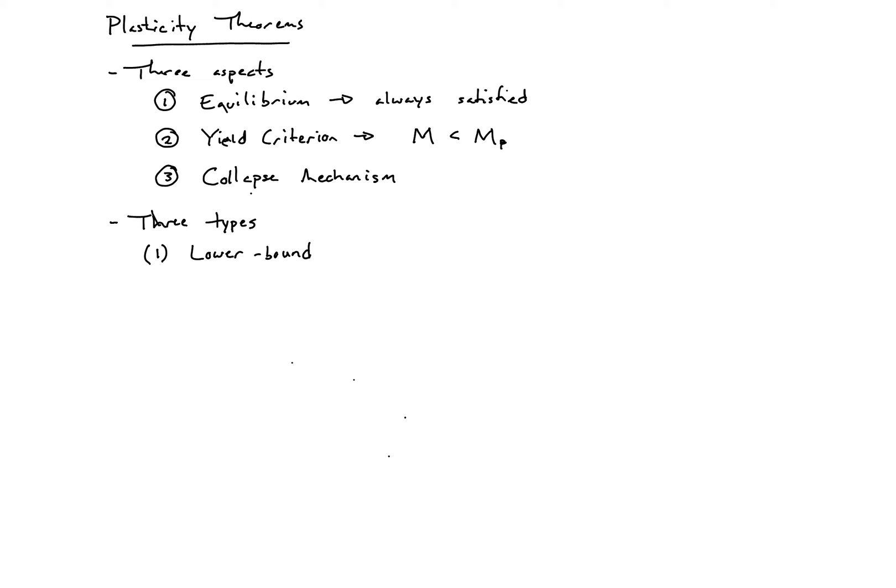For a lower bound theorem, we're approaching the actual collapse load from beneath that load. So we have P lower bound is always less than or equal to P collapse. In our lower bound theorem, we always satisfy equilibrium and the yield criterion, so throughout the section, we're always below yield.